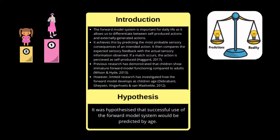Previous research has demonstrated that children show immature Forward Model functioning compared to adults. This is argued to be due to increased noise in the brain areas that are thought to control the Forward Model system in children. However, limited research has investigated how the Forward Model develops as children age throughout childhood, so we hypothesized that successful use of the Forward Model system would be predicted by age.